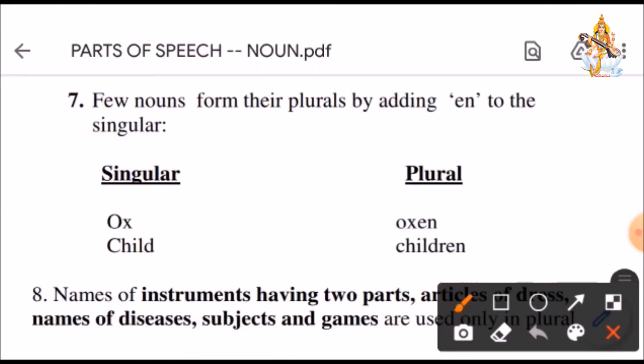Few nouns form their plurals by adding EN to their singular. Like ox, oxen. Child, children.